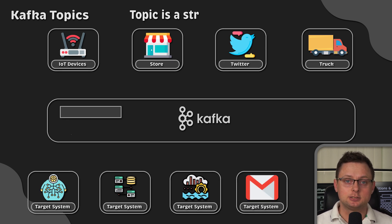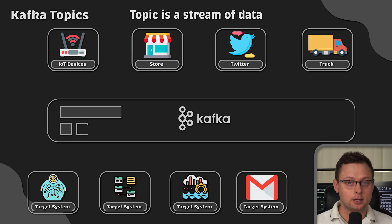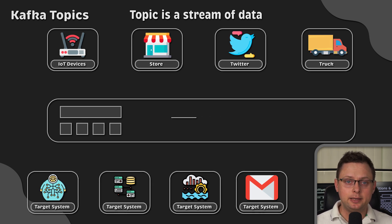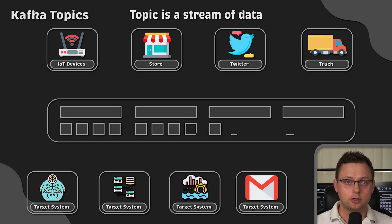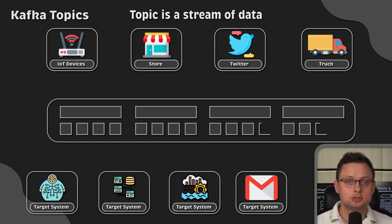Kafka topics are specific streams of data within your Kafka cluster. A Kafka cluster can have as many topics as you want, especially with a new Kafka mode that completely removes ZooKeeper from Kafka architecture. It can handle millions of topics and partitions.